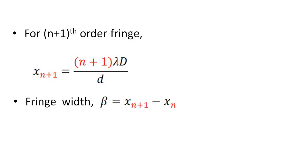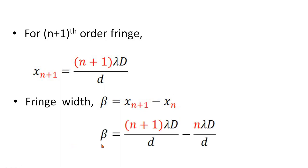Fringe width beta is equal to x(n+1) minus xn — the distance of separation between consecutive bright fringes, and similarly for dark fringes. Let us substitute the values: beta equal to (n plus 1) lambda d divided by D minus n lambda d divided by D.